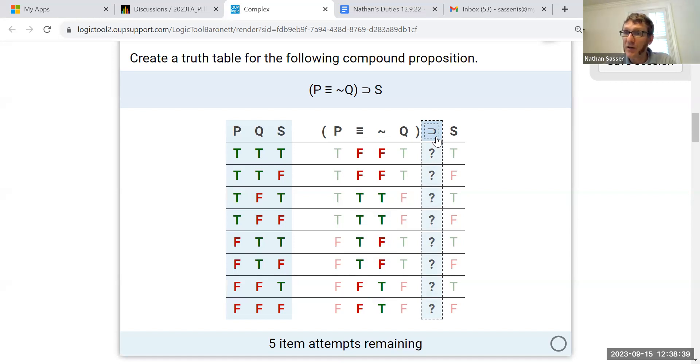So to determine the truth value of this horseshoe, we're going to be looking at the truth value of the triple bar, because that's what ranges over the entire compound antecedent of the horseshoe, and we'll be looking at the truth value of the S.